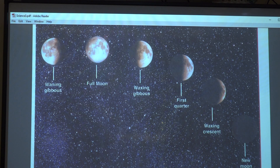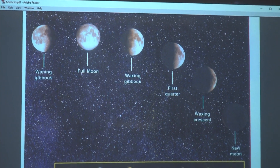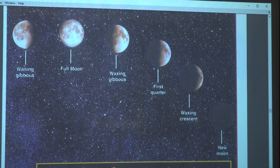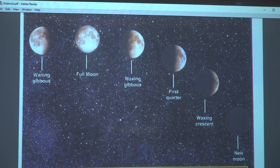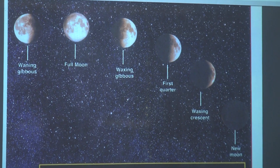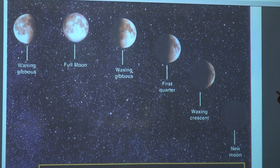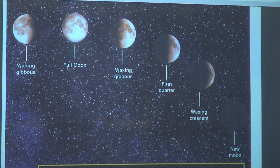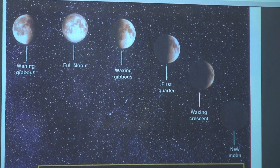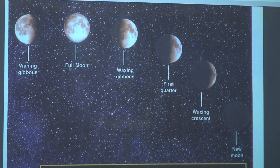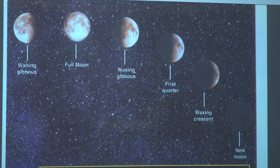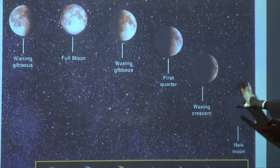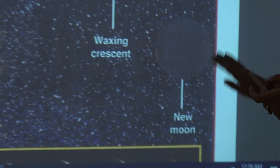Today we have a new subject. Let me ask you a question: what's moon phase? Moon phases are the different shapes of the moon that appear in the sky. The different shapes of the moon that we see in the sky are called moon phases.